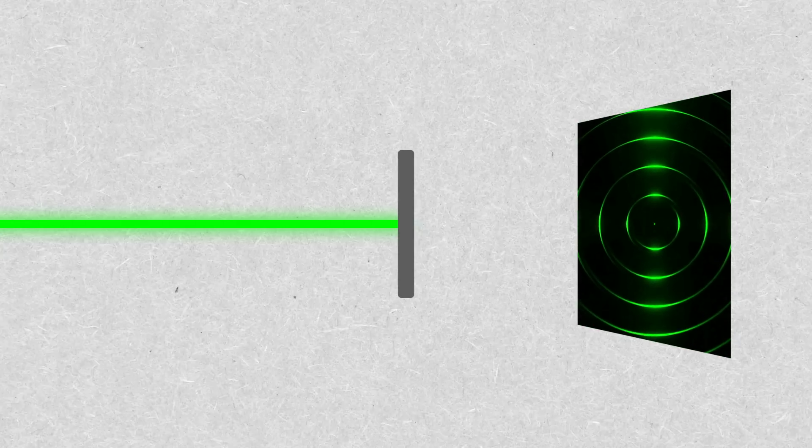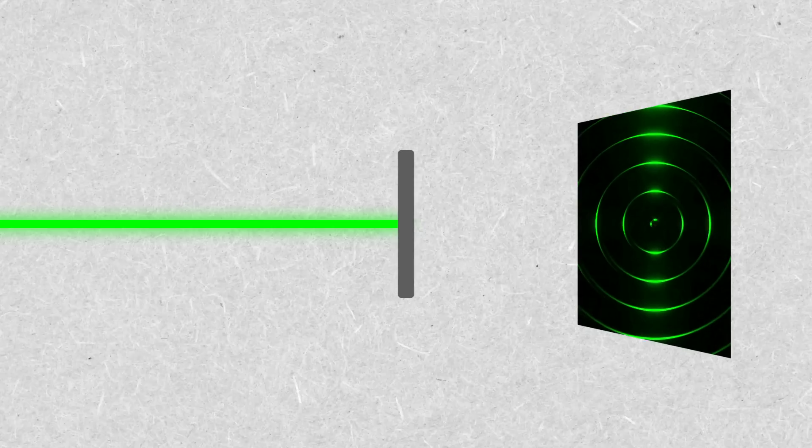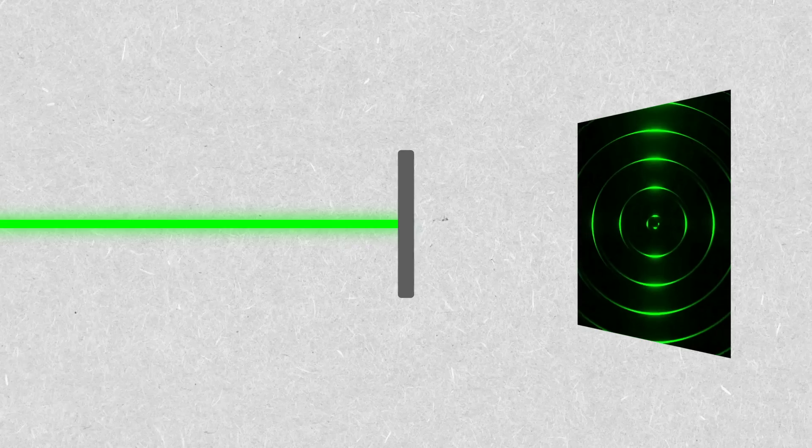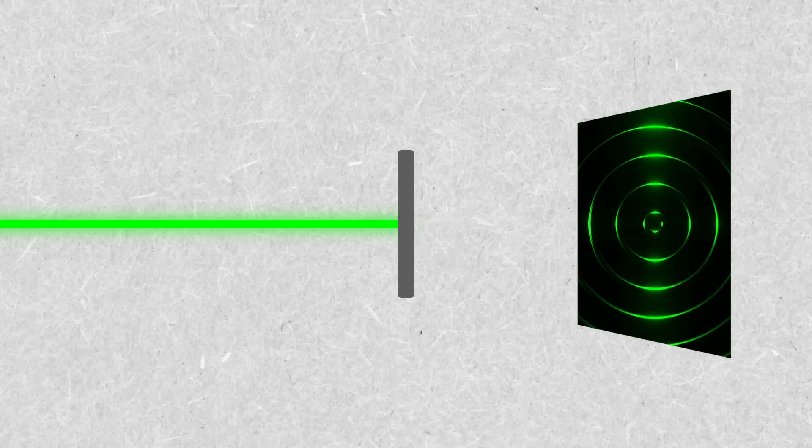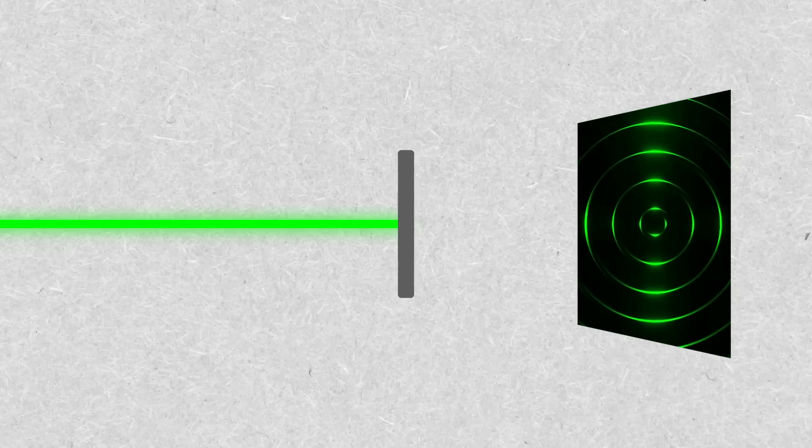Each team fired electrons at different materials and managed to observe a diffraction pattern, something very specific to waves that ordinary particles cannot do. And so they observed for the first time electrons actually behaving as waves.